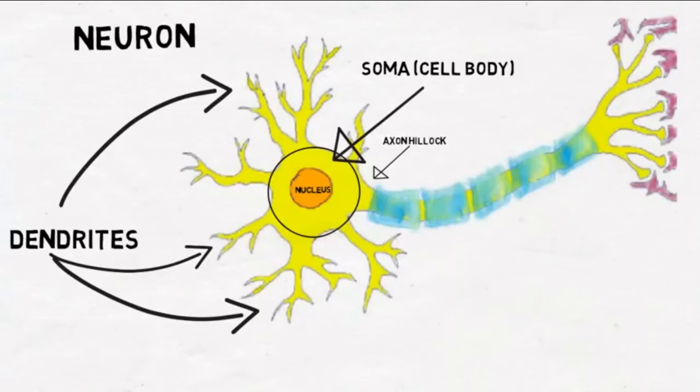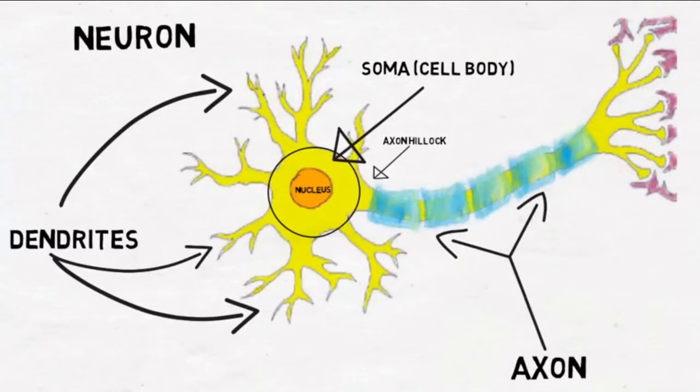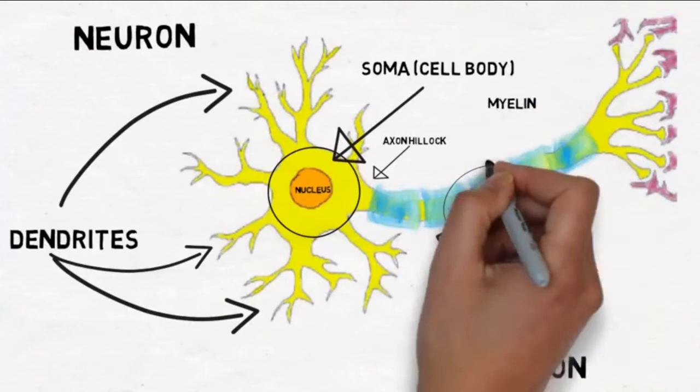If the signal coming from the dendrites is strong enough, then a signal is sent to the next part of the neuron, which is called the axon. At this point, the signal is called an action potential. The action potential travels down the axon, which is covered with myelin, an insulatory material that helps to prevent the signal from degrading.